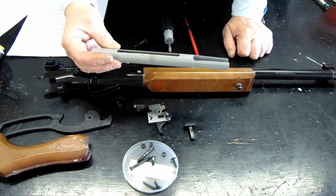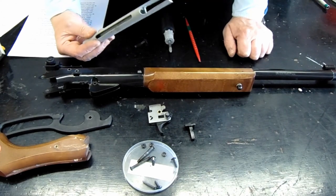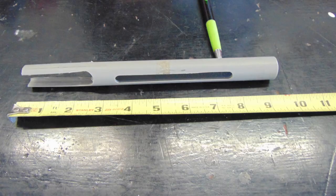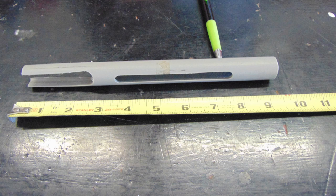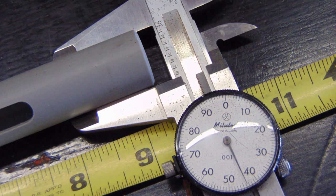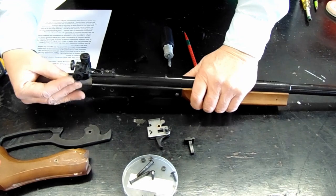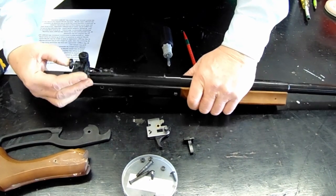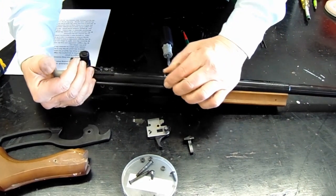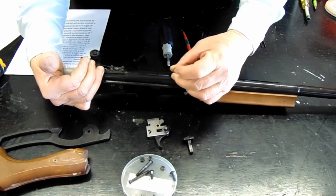This is a special tool that's required to compress the plunger spring. It inserts in the back of the gun. So with the plunger tube inserted in the back of the gun, I can push that forward, and this is the key that's holding the gun together.